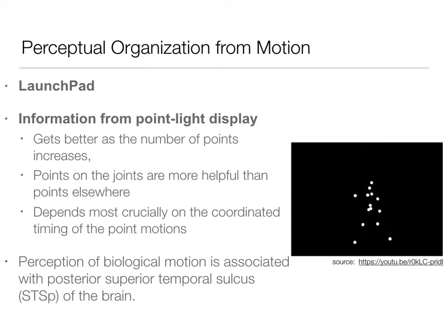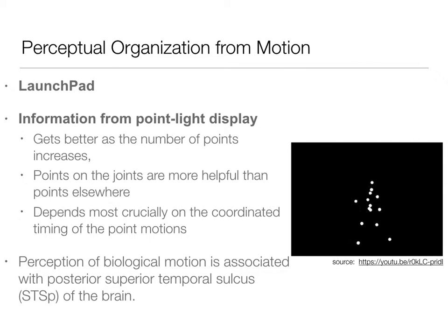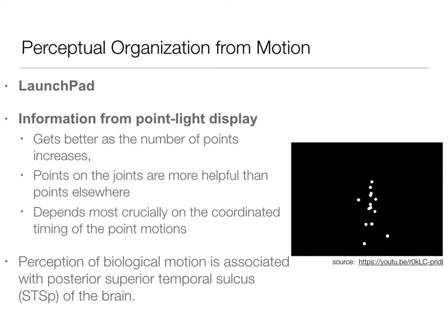We're better at this the more dots we have — if we just have dots in a couple of places, it's a lot harder to see. The dots are important in where they're placed; you can't just put them anywhere. You really want them on the joints because that's where we can infer that motion. It really depends on the coordinated timing of the points' motion. This is information based on top-down processing of what we know biological movement looks like. The posterior superior temporal sulcus (STS) is really involved with this biological motion, as opposed to just area MT — another module that we see is influential here.